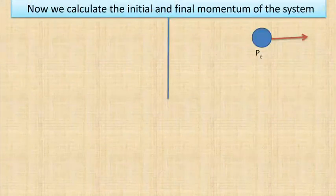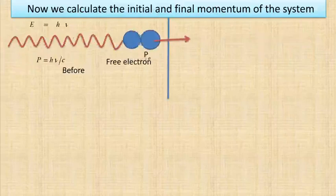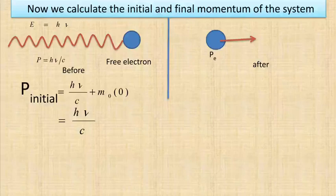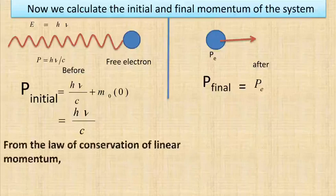Now let us calculate the initial and final momentum of the system. The initial momentum before interaction is p_initial = momentum of the photon + momentum of the free electron = hν/c + m₀×0 = hν/c, since the electron is initially at rest. The final momentum is p_final = p_e, the momentum of the electron only.